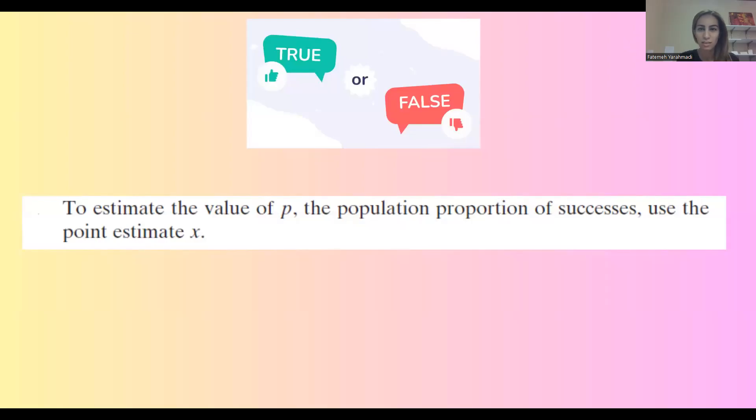Let's talk about confidence interval basics, and we are talking about confidence interval for population proportion. Is it true or is it false? To estimate the value of P, P is the population proportion, we use point estimate x. Is the definition of point estimate x, or does point estimate have a different definition?